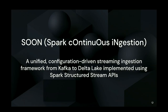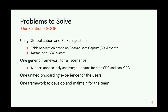To solve this, at Coinbase we introduce Swoom — a unified, configuration-driven streaming ingestion framework from Kafka to Delta Lake, implemented using the Spark Structured Streaming API. All table replication problems have been converted to this Kafka-to-Delta Lake ingestion problem to fit into the Swoom framework. With Swoom, we basically unify table replication and Kafka ingestion into one problem.